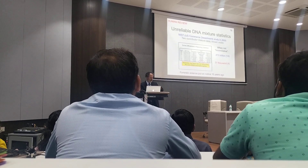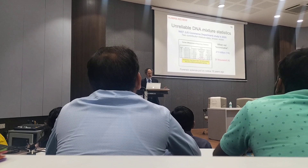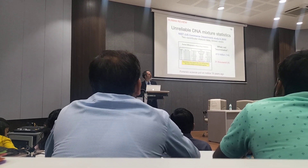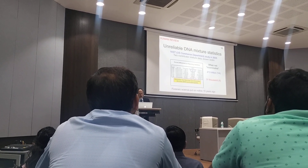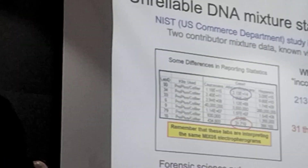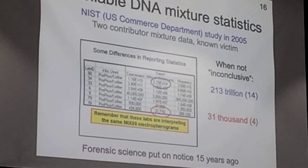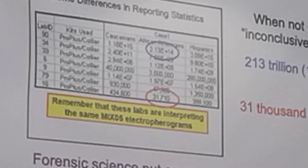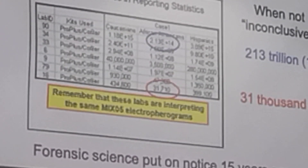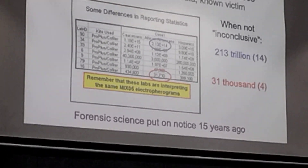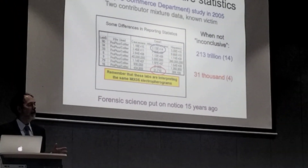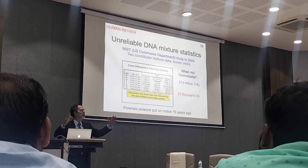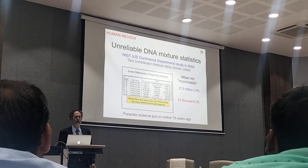But there are problems. A U.S. government study almost 20 years ago showed that with simple two-person mixtures, most labs called the results inconclusive. The labs that did put a number to it ranged from tens of thousands — a one followed by four zeros — to hundreds of trillions — a one followed by fourteen zeros. Clearly there's a problem if most labs think this is inconclusive and the statistic is ranging over ten orders of magnitude.